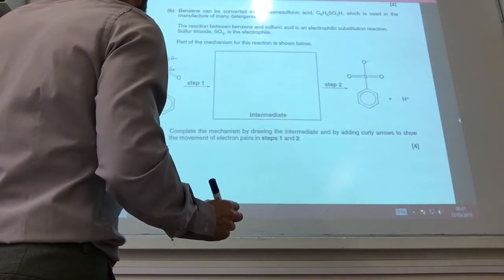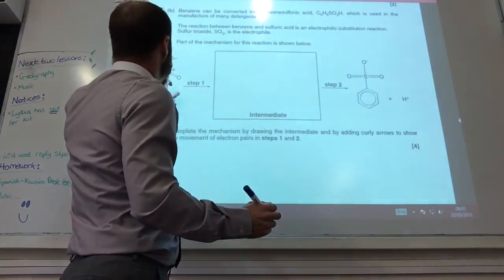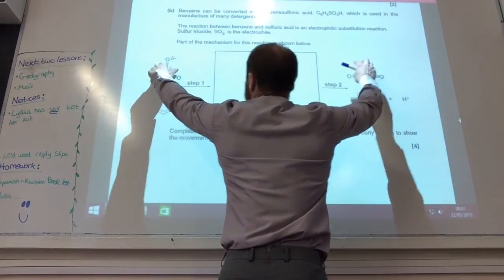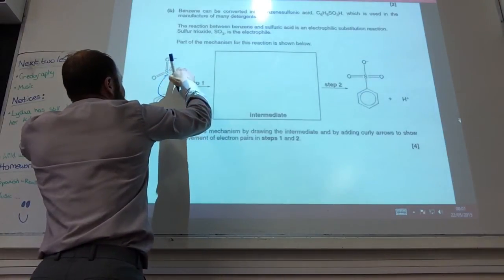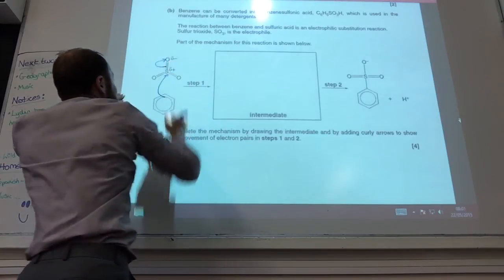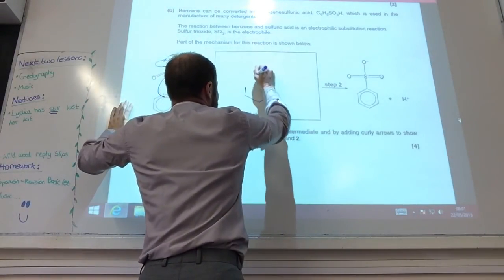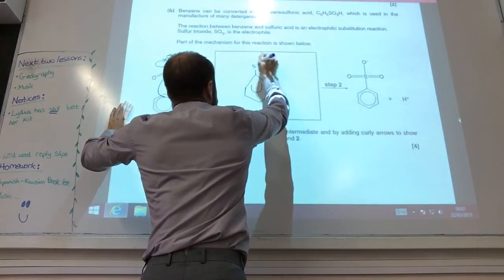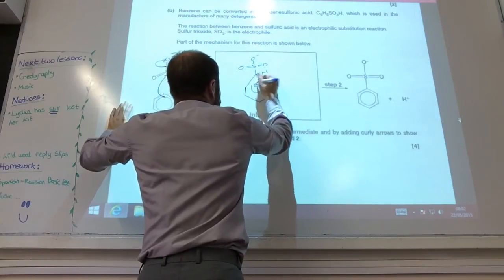The next step is this electrophilic substitution mechanism. There's an SO3 group, but that double bond has gone to a single bond. The first step is always the pi electrons come up to attack a delta-positive species or atom, and then that bond breaks. My intermediate is that carbocation with a positive charge, and then that bond breaks to give H+ there.